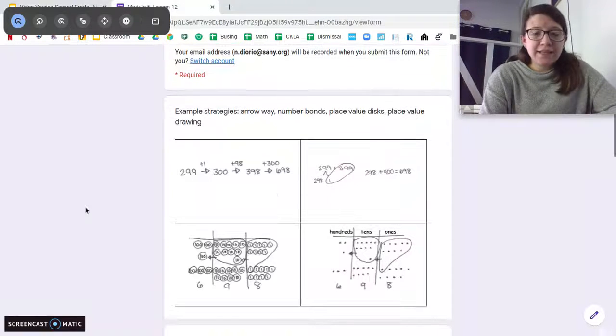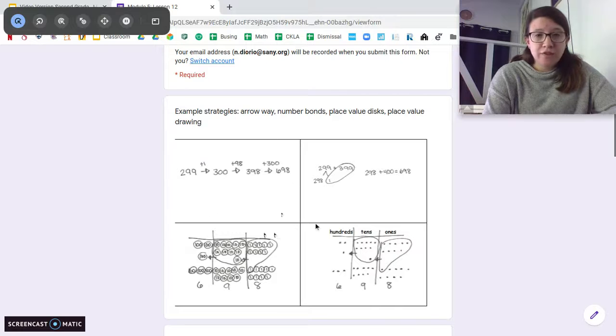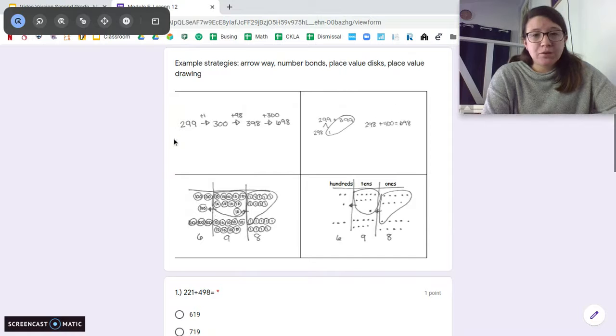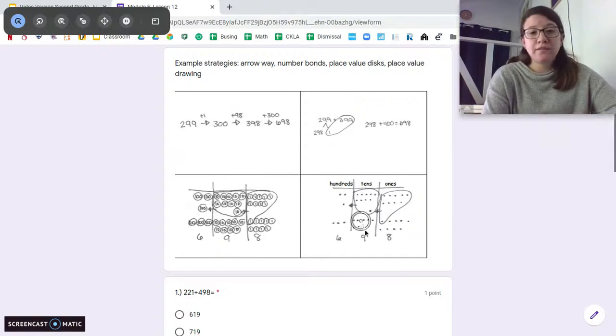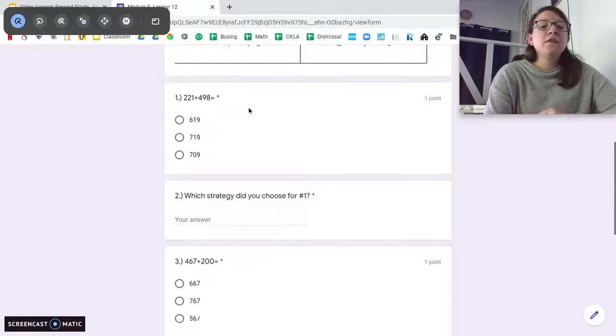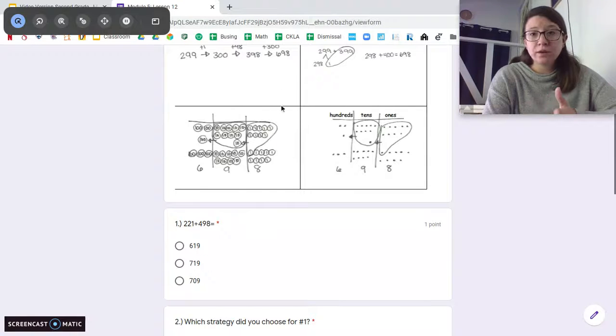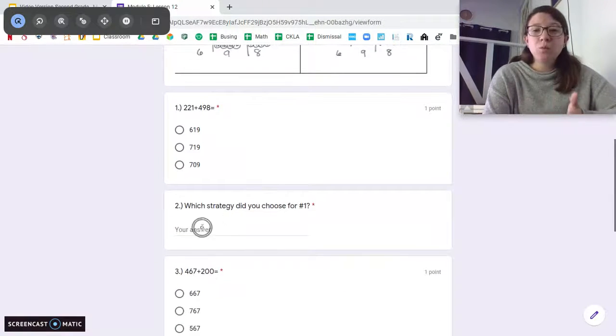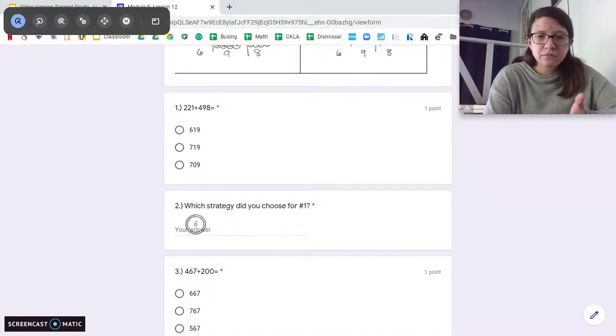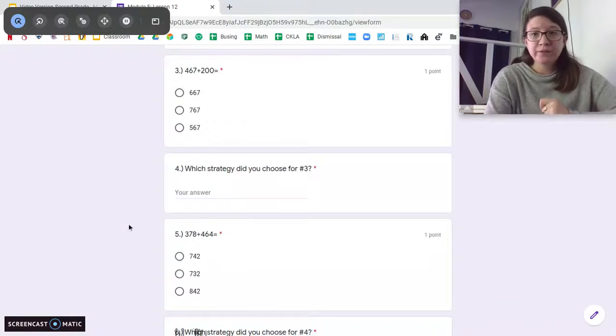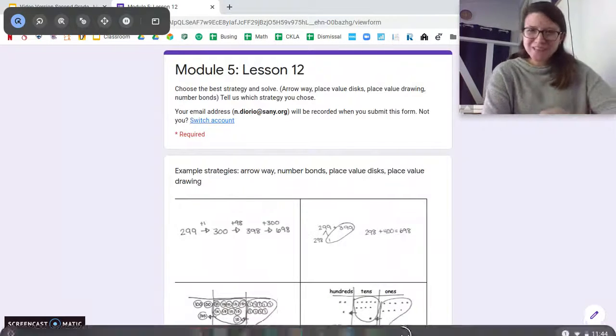For your exit ticket today, you're going to see 4 different strategies. Okay? For each one of these problems, these are your example strategies. So we have the arrow way, the number bond way, place value disks, or a place value drawing. You can also do the vertical way. For each of these problems, you're going to solve using one of the strategies, including the vertical way. And then you're going to tell me which way you did it. So if you solved this one using number bond way, write number bond way. If you solved this one using arrow way, use the arrow way. Tell me which strategy you used. Just curious. Just want to know. Have fun!